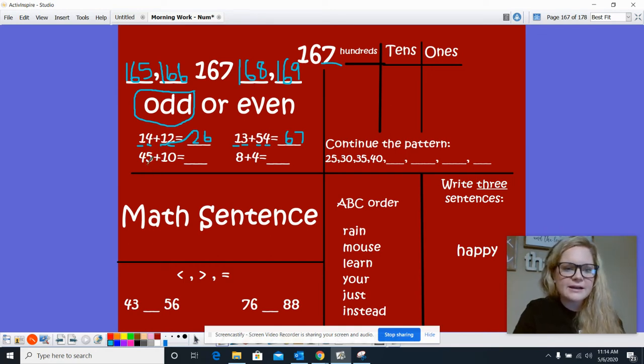Now 45 plus 10. 1's place 5 plus 0 equals 5. And tens place 4 plus 1 equals 5. So 45 plus 10 equals 55.